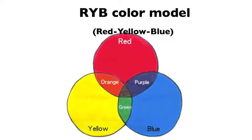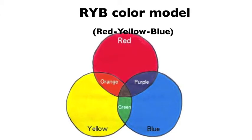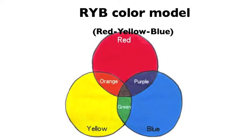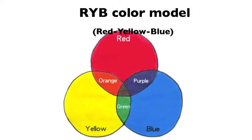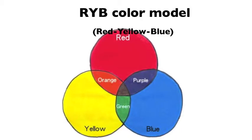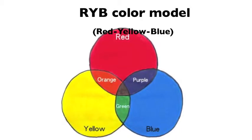The RYB color model stands for the triad red, yellow, and blue as primary colors in subjective color theory. We will get secondary colors of orange, green, and purple by mixing the primary colors.